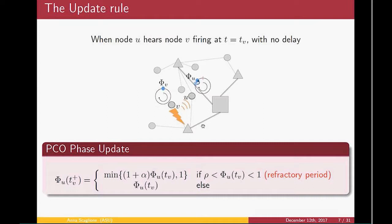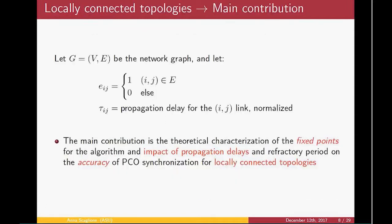Now in this idealized model, which is the model that Mirollo and Strogatz considered, every node is led to fire at unison. One of the reasons is that these firing events are instantaneously received at every node. Obviously, this is not a realistic assumption.